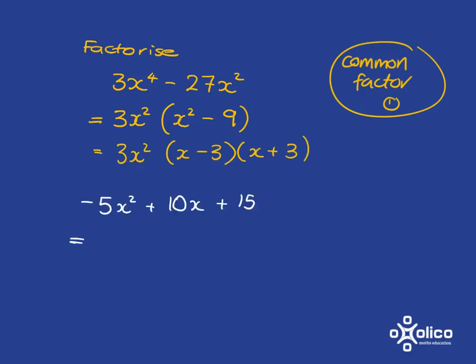If asked to factorise something like this, again our first step is always to look for a common factor. Here the only common factor is 5. We've got a bit of a debate here, we can either take out just plain 5 or negative 5. I'm going to take out negative 5 and I'll tell you why.